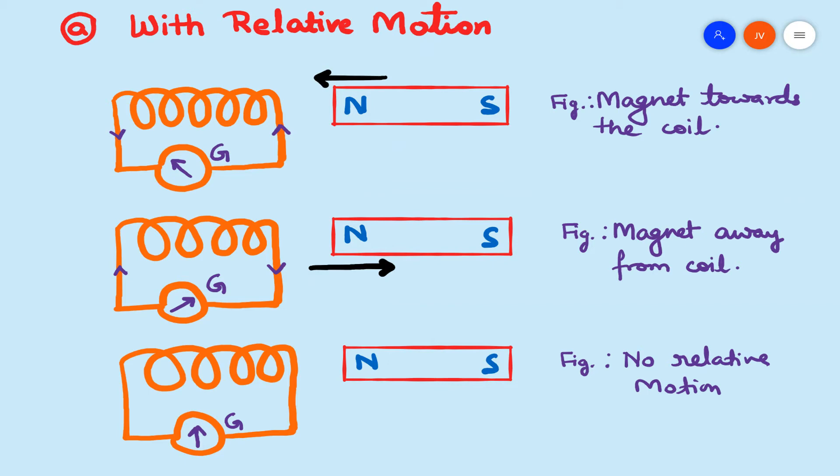In the first case — with relative motion — the magnet is taken towards or taken away, or the magnet is kept stationary and the coil is taken towards or taken away. In both cases, induced current is generated in the coil, and its generation is identified by the either side's deflection of the galvanometer. In the third scenario, where the magnet is held stationary near or inside the coil, if there is no relative motion between magnet and coil, there will be no induced current in the coil.